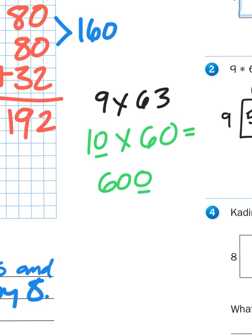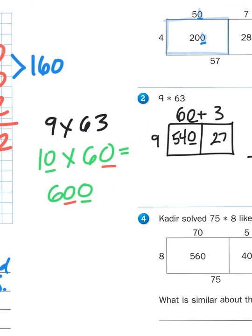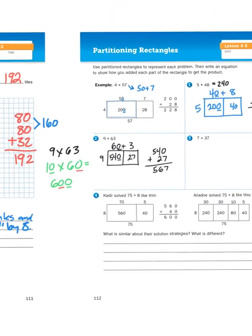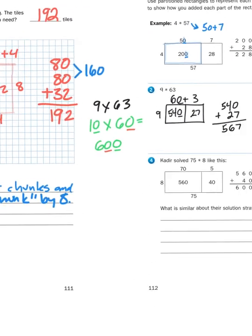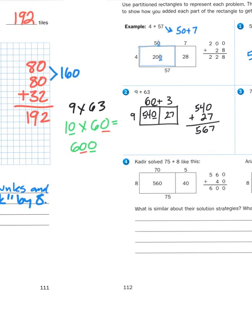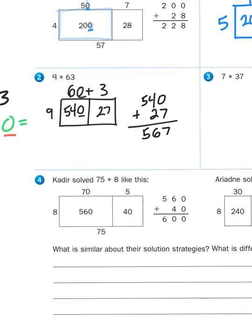Now, 567 is pretty close to 600. So that's a reasonable answer. Because if I rounded 567 to the nearest 100, it would round up to 600. So partitioning rectangles is just a way to break down a problem into its smaller parts and then just complete each part. You just have to remember that you have to reassemble the parts once you've got all of your partial products. And that's how you go about doing partitioning rectangles.